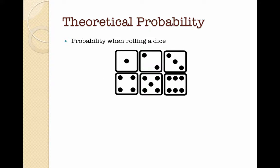Let's look at probability when rolling a dice. This is the sample space: 1, 2, 3, 4, 5, 6. There are 6 elements when rolling a dice. There are no other possibilities.